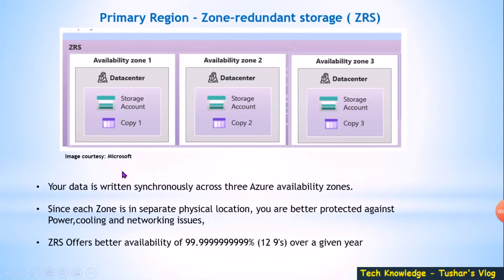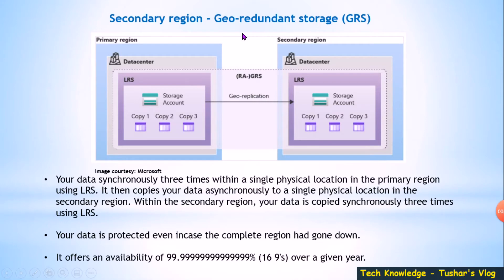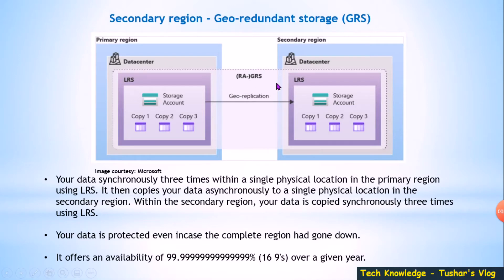Geo Redundant Storage (GRS) is very similar to LRS in the primary region — your data is written as three copies in the same data center — but it also copies over to a second region. So if the primary region is Australia East, the paired secondary location would be Australia Southeast. If the primary location fails, your secondary location is more than 200 kilometers away, so chances are your data will be much safer.